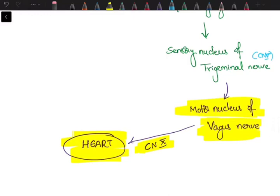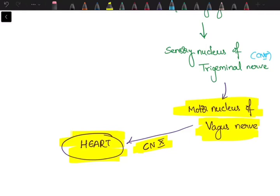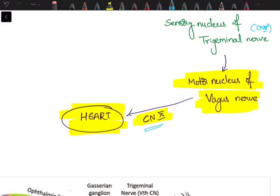From this, via reticular formations, information goes to vagus nerve, the 10th cranial nerve. From the motor nucleus of vagus nerve, information is carried to the heart via cranial nerve 10, where it causes parasympathetic effects on the heart, causing bradycardia and other effects.